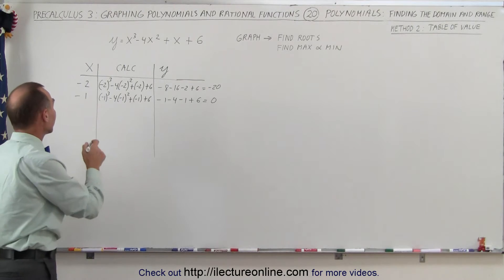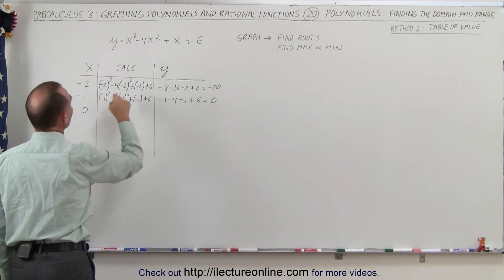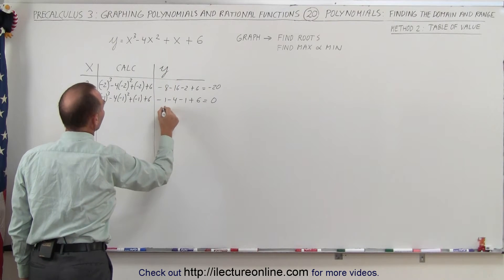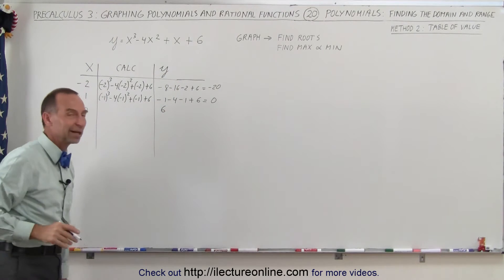Continuing on, the next value let's try 0. That would be easy. 0 plus 0 plus 0 plus 6. Y would be equal to 6. We don't have to actually work it out anymore.